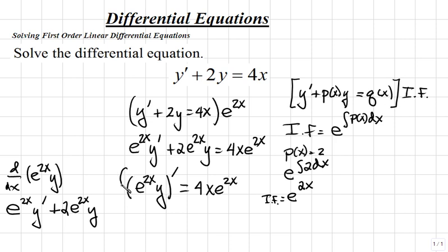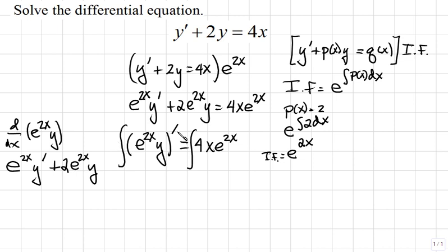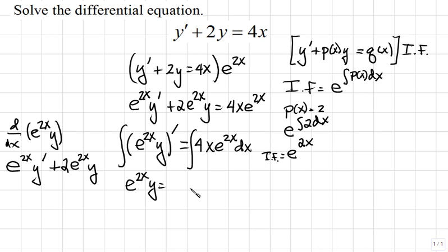Next we'll integrate both sides to cancel out the derivative. The integral and the derivative on the left cancel, giving e to the 2x times y. On the right side, we have the integral of 4x e to the 2x dx. To integrate this, we'll need to use integration by parts. Let's work on this right side separately to find an antiderivative, and then once we find the result, we'll replace it in this stage of our equation.